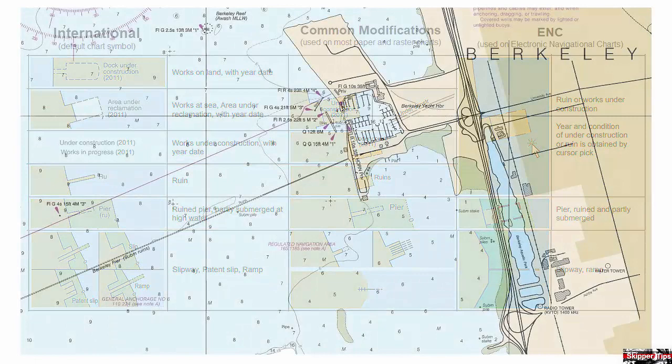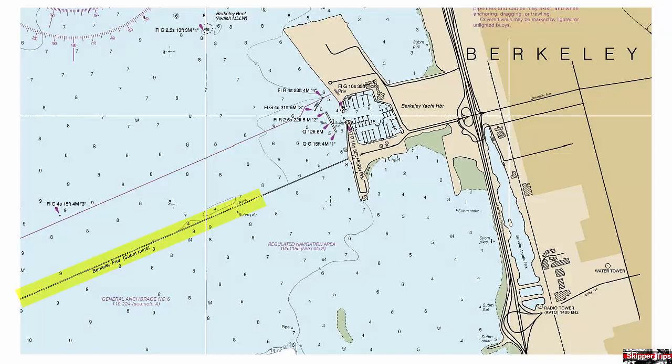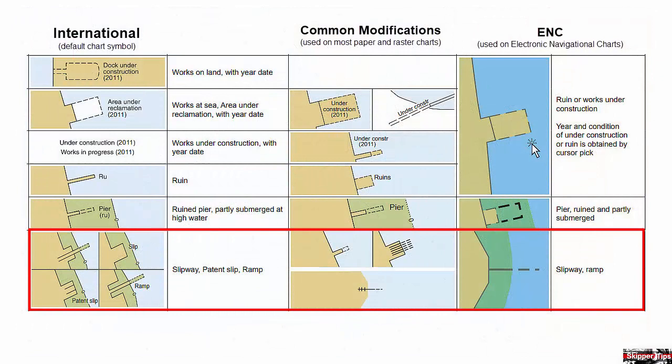Here on this chart, off Berkeley Marina in San Francisco Bay, note how the submerged ruins begin well off the visible part of the old Berkeley pier. Set your course to stay well clear of an extreme hazard like these ruins.